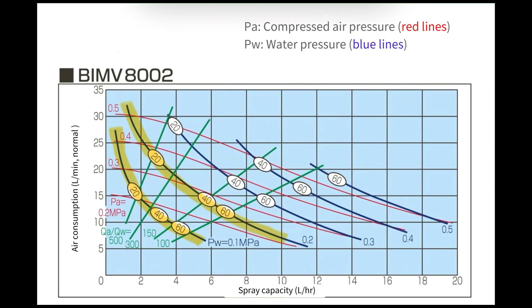The blue line indicates the liquid pressure. The liquid pressure is labeled at the end of the lines, from 0.1 megapascals to 0.5 megapascals. By contrast, the red line indicates compressed air pressure.